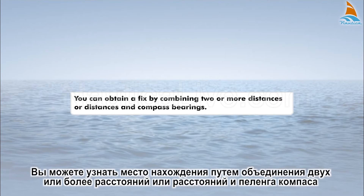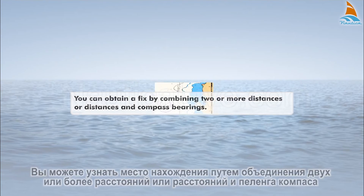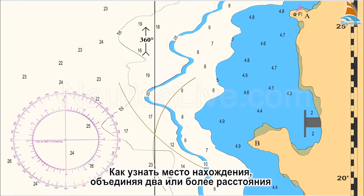You can obtain a fix by combining two or more distances, or distances and compass bearings. This is how you plot a fixed position combining two or more distances.